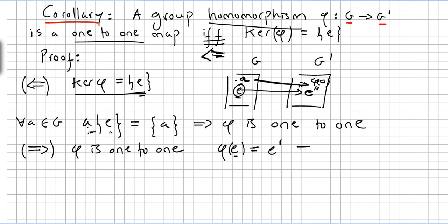So that proves that the kernel of the homomorphism is the identity. And that proves the theorem. Because that proves that if Φ is 1 to 1, then the kernel of Φ is the identity. If and only if.